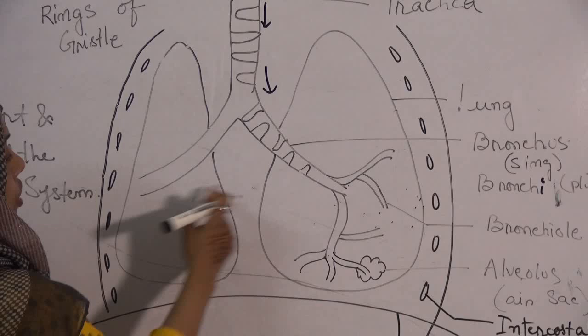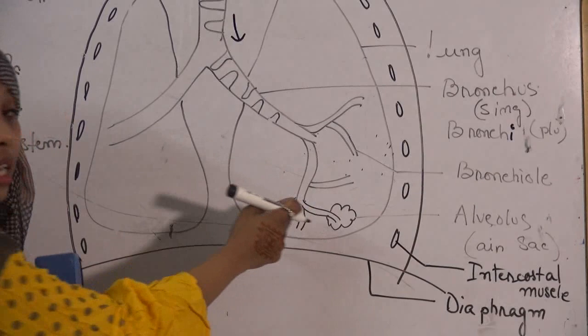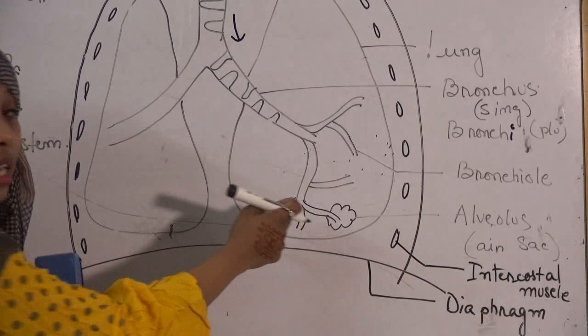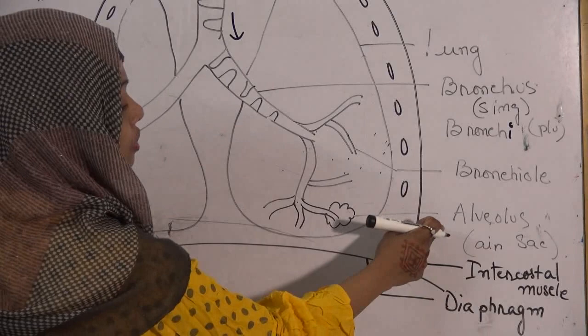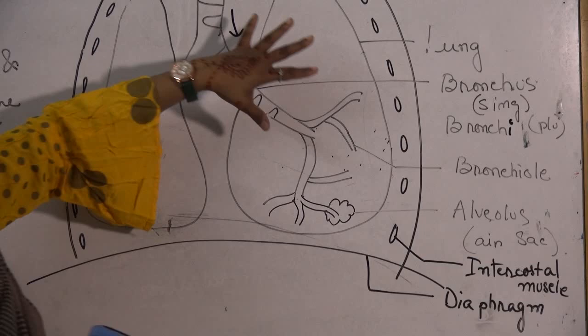The bronchi further branch into minute branches known as bronchioles. Each bronchiole terminates — meaning it ends — in a sac-like structure known as the alveolus. If you talk about just one air sac, we call it alveolus; if we talk about more than one, we designate it as alveoli.